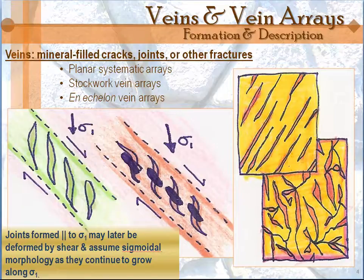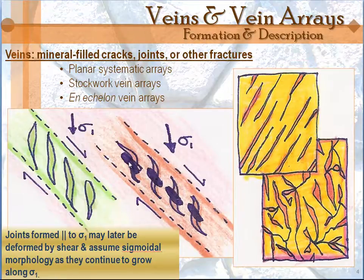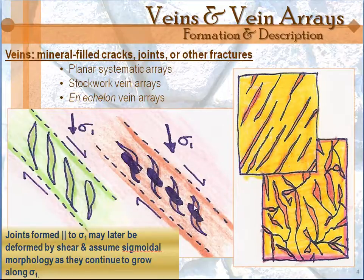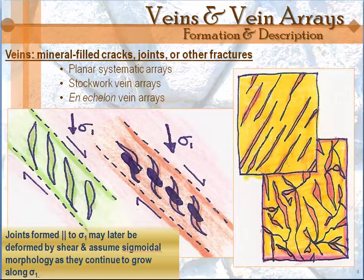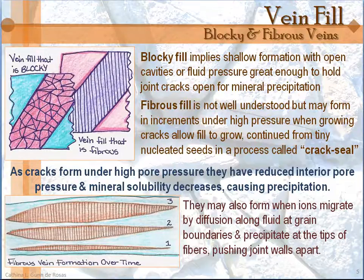Oftentimes new fractures will actually form right in the middle of the original older fractures. They have kind of an oblique angle across them. So you'll often see not only your array, but also the beginning of these younger joints opening up there, sort of perpendicular to new stresses on the rock. Now that we're talking about veins — our mineral-filled openings — let's talk a little bit about the characteristics of vein fill.